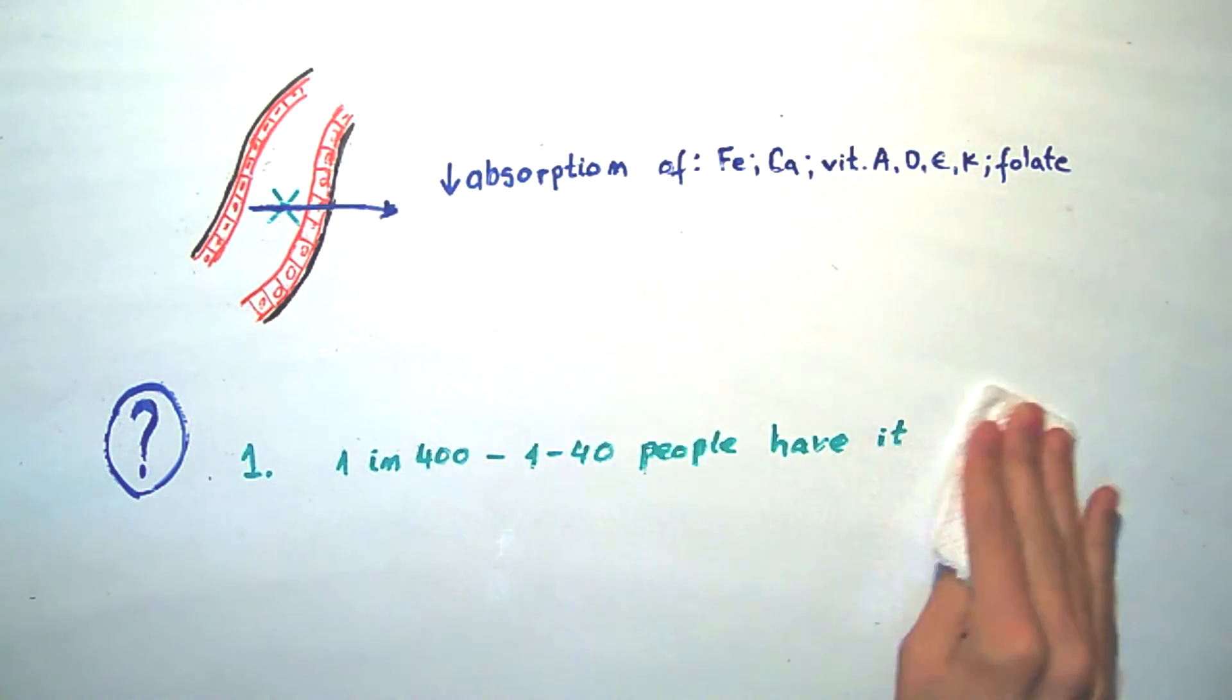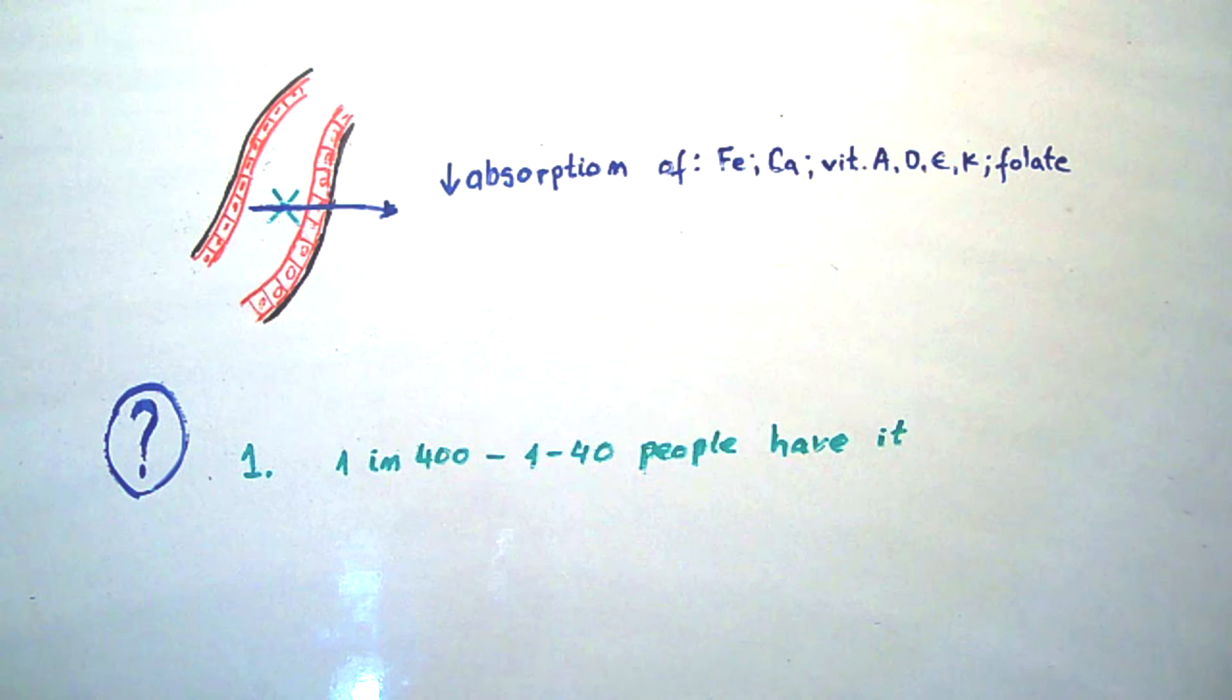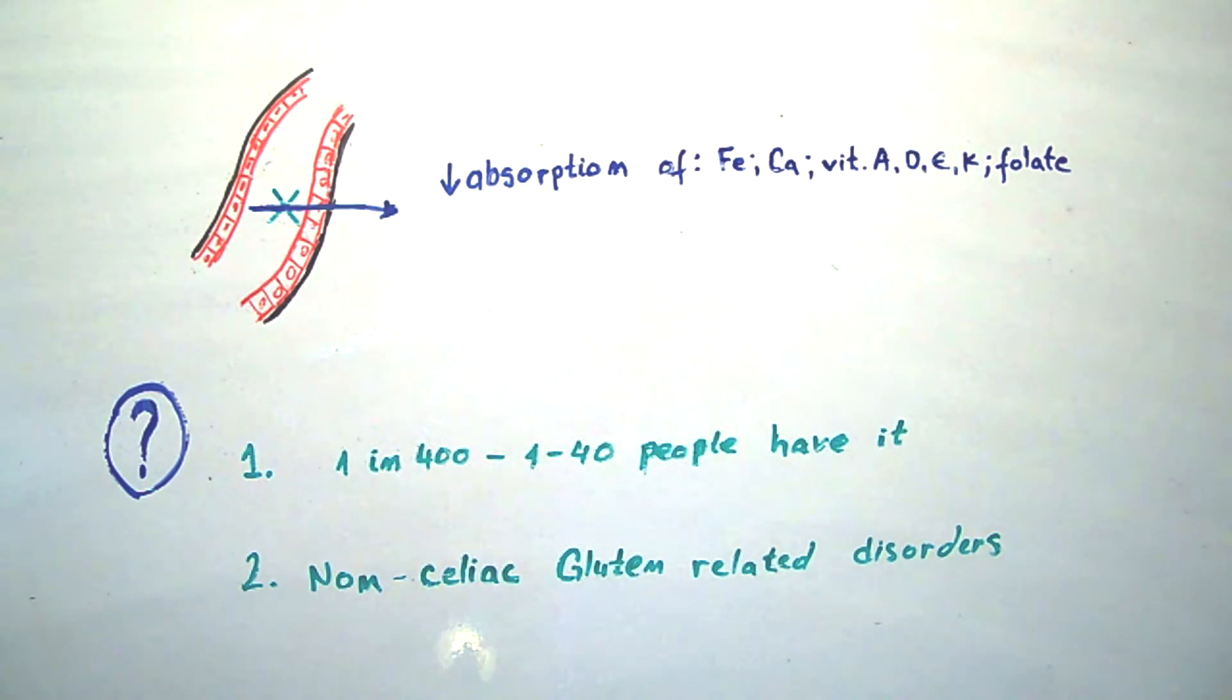First, obviously, it is one of the most common chronic diseases. Depending on the region, from 1 in 400 to 1 in 40 people have it. And the second reason is non-celiac gluten-related disorders, which I will be talking further on this video if you are still here.